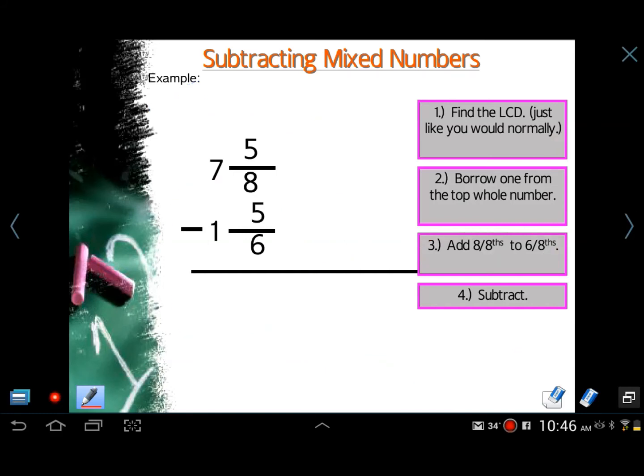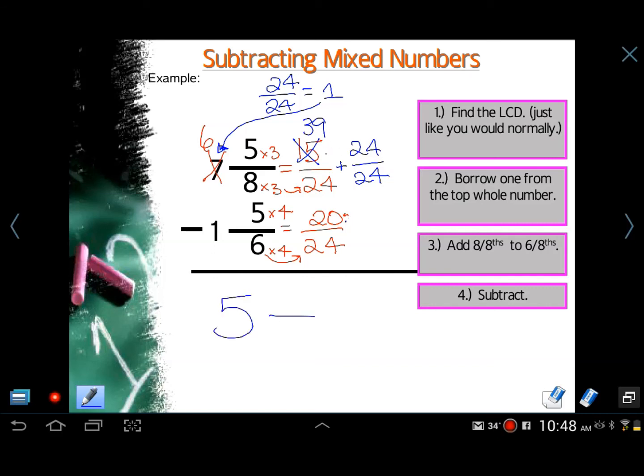Okay, let's go into this example here. We have seven and five-eighths minus one and five-six. Just like what has happened before, we have to borrow again. We cannot take 20 away from 50. So let's borrow from the seven and make that a six. And then what are we going to add to 15 24ths? We're going to add 24 24ths. So what does 24 24ths equal? It equals one. Where did we get one from? We got it from the seven. 15 plus 24 is 39. Now this can be subtracted. 6 minus 1 is 5. 39 minus 20 is 19. And there's your answer. 5 and 19 24ths.